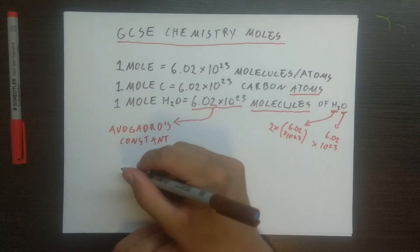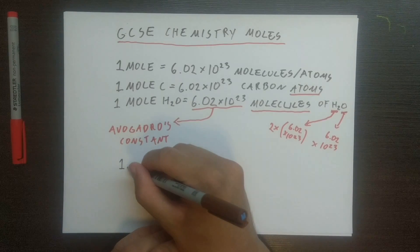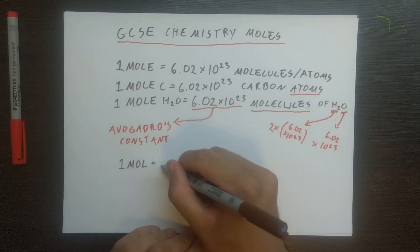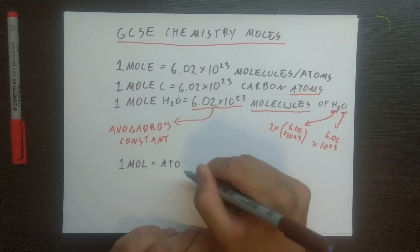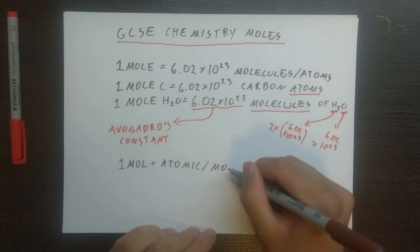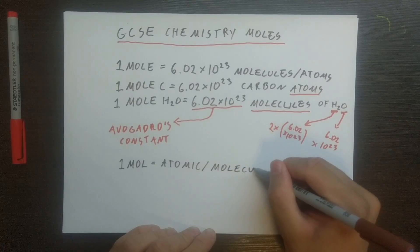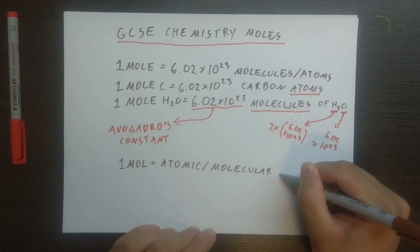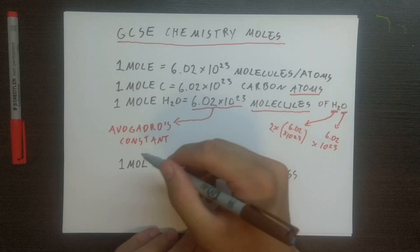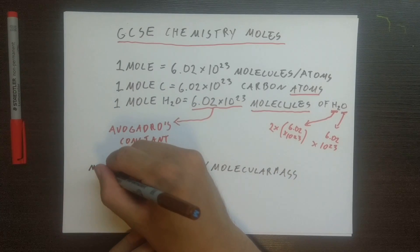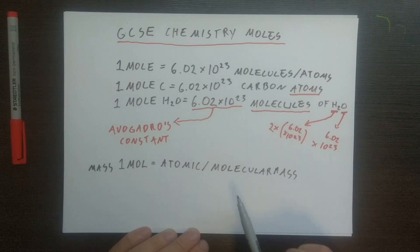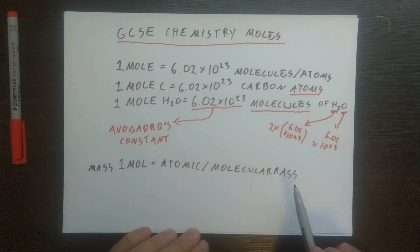I'm going to put it down here. So one mole, I'm going to shorten it here, is equal to atomic or molecular mass. To be more accurate, mass of one mole is equal to atomic or molecular mass.